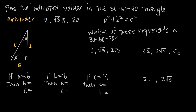So if we look at this first figure right here, what we see is that we have a right triangle. We know it's a right triangle because we have this indication here that we have a 90-degree angle in one corner. And then we see that we have two other angle measures.